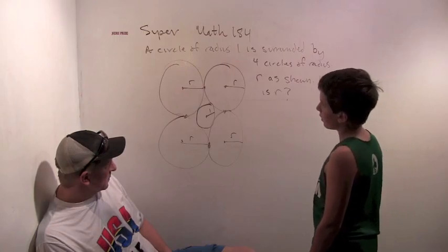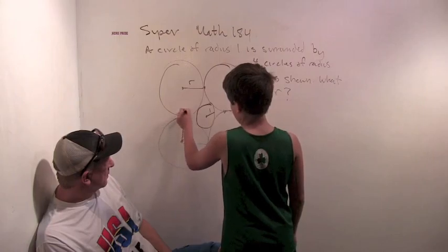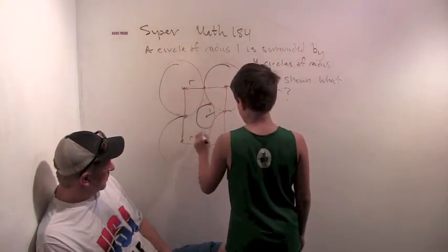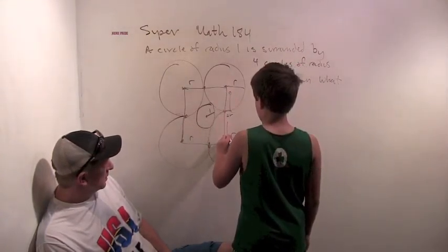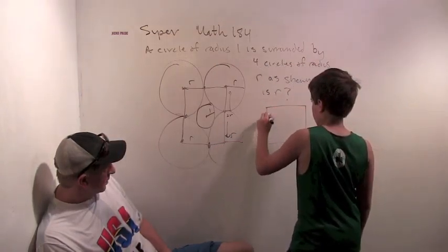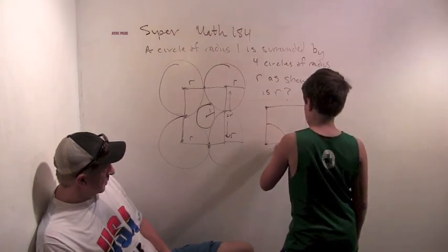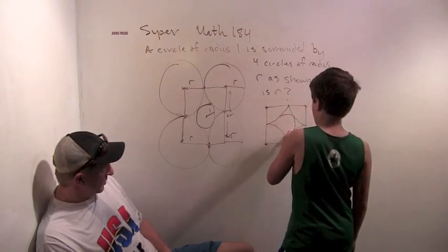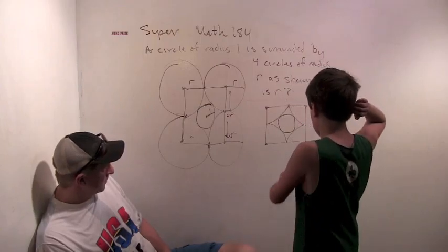Well, when I was doing the problem, I noticed that if you connected up the centers of all the circles, you get a square of radius 2r. Alright. And then... Better picture than I have, that's for sure. Then this is what's inside the square.